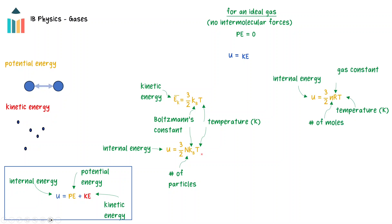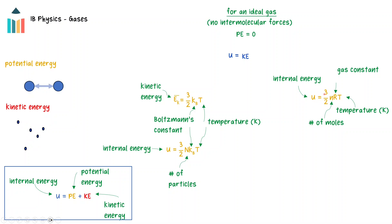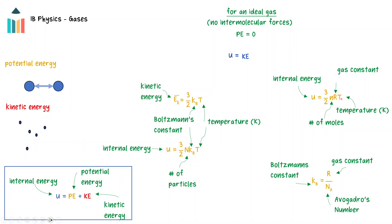There is another equation that expresses the internal energy of a gas in terms of the number of moles: internal energy equals three-halves times the number of moles times the gas constant times the temperature in Kelvin. It can be shown that Boltzmann's constant and the gas constant are related through the equation: Boltzmann's constant equals the gas constant divided by Avogadro's number.